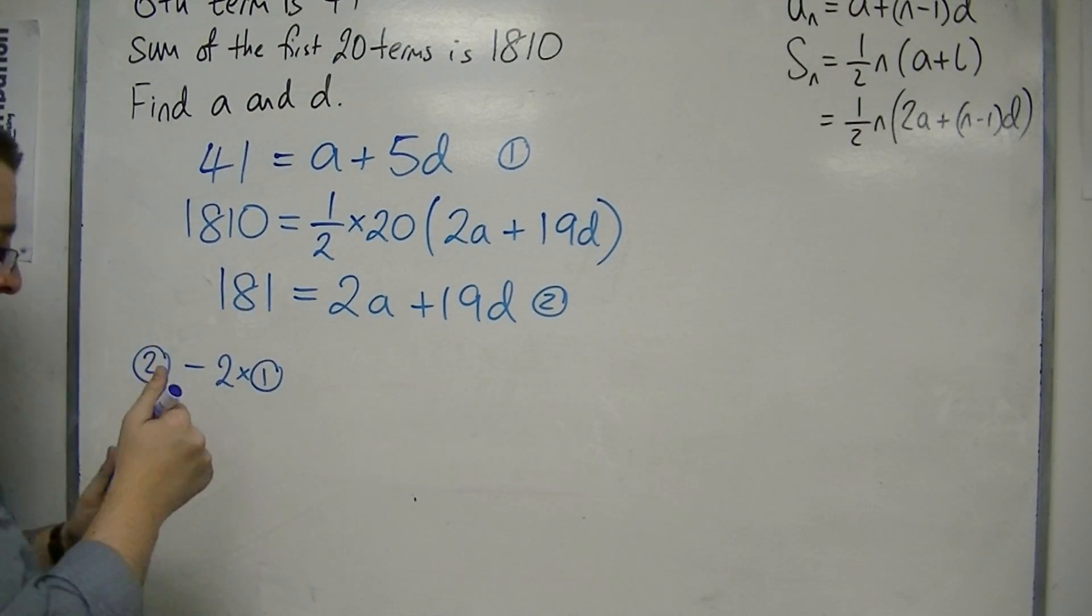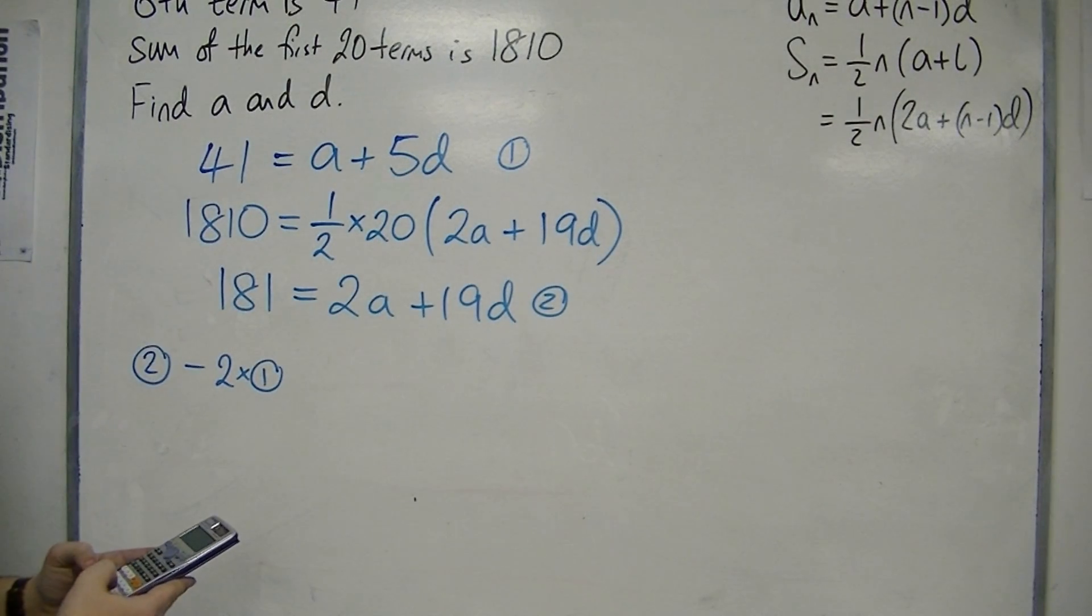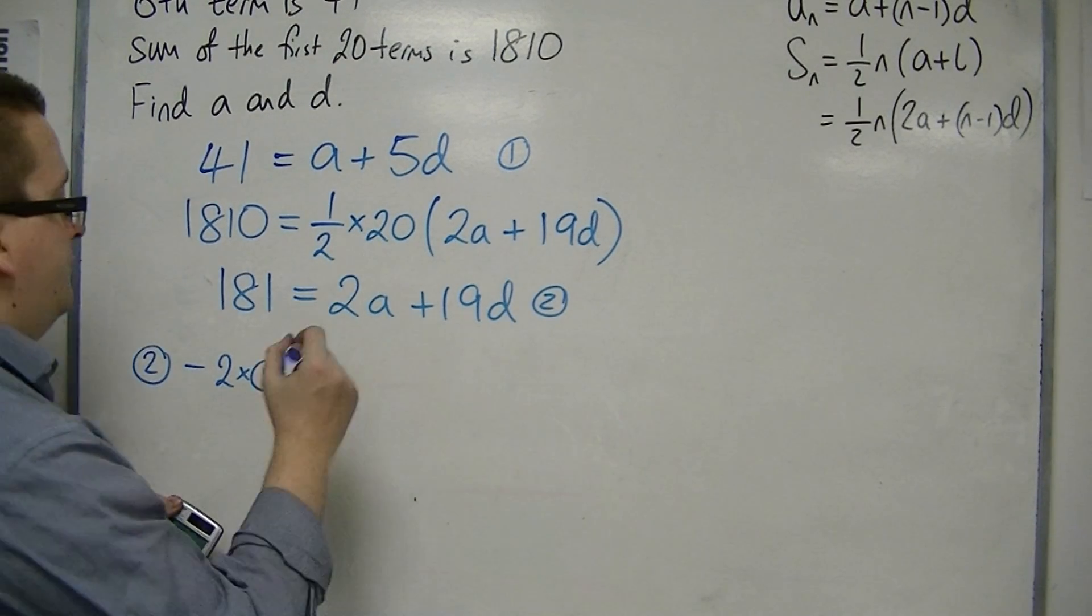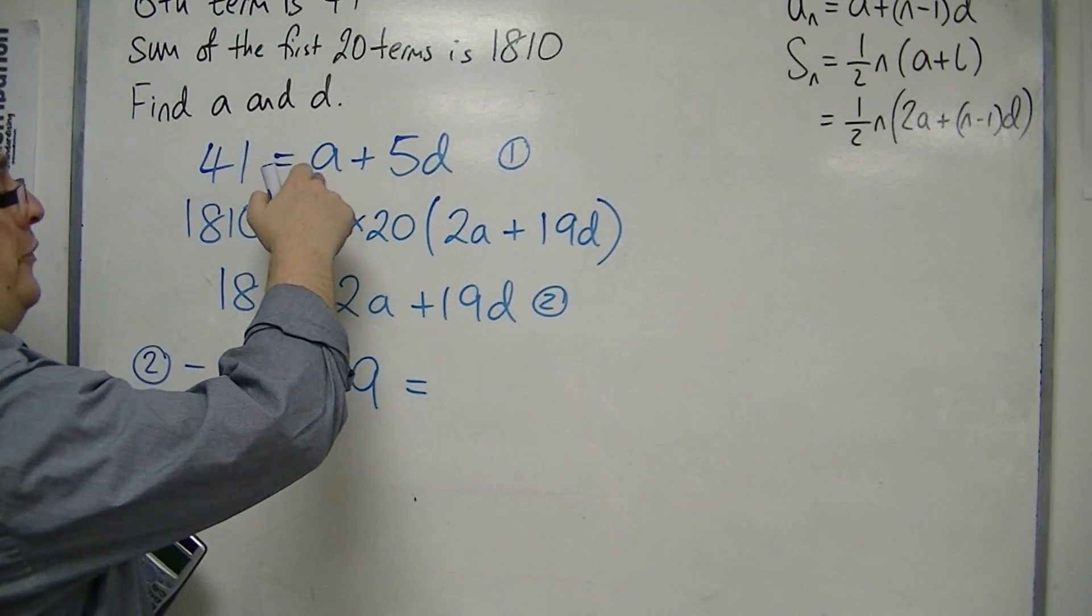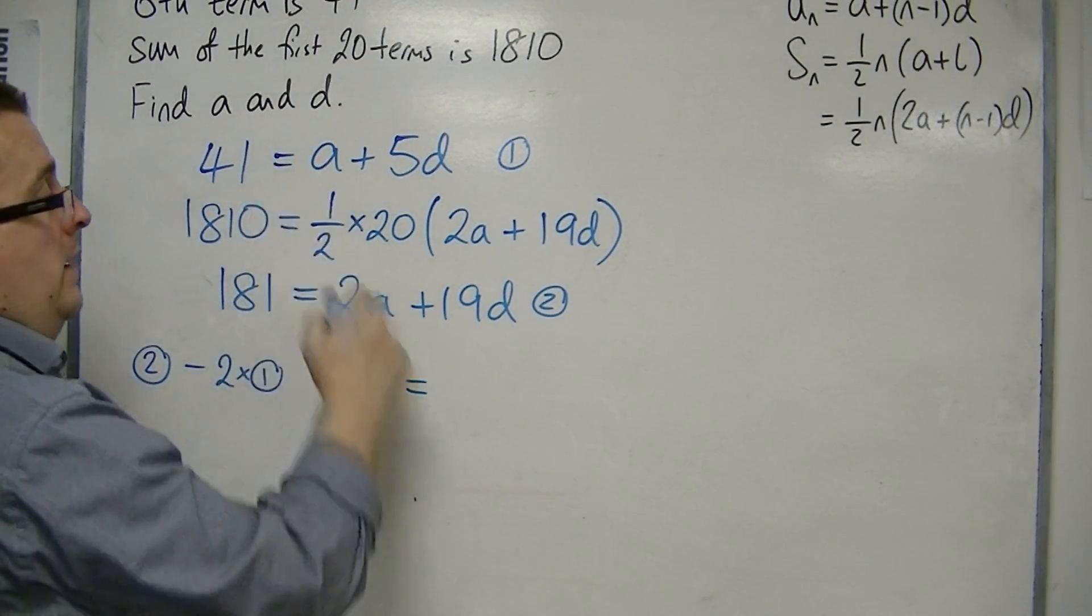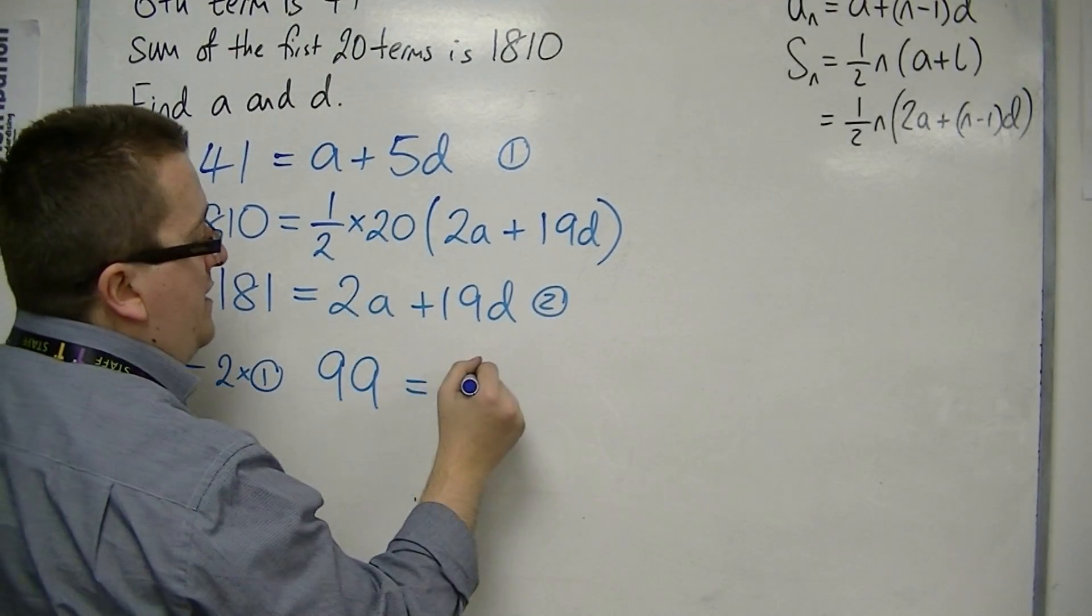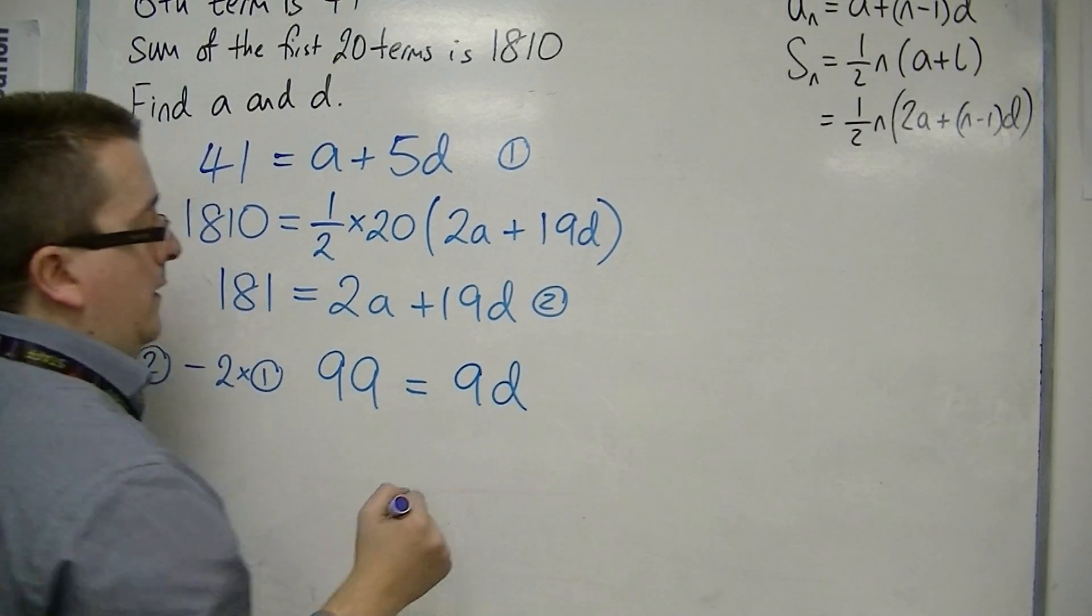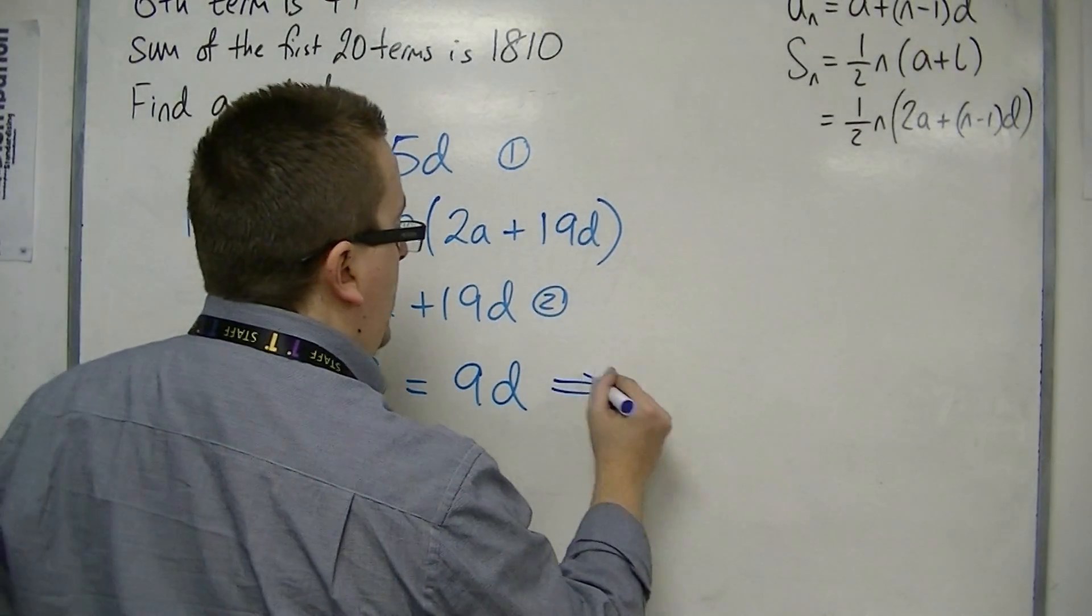So, I've got 181, take away 2 lots of 41. 181, take away 2 lots of 41 is 99. 2A, take away 2 lots of A is 0. So, 19D, take away 2 lots of 5D is 9D. So, 99 is 9D. So, D must be 11.